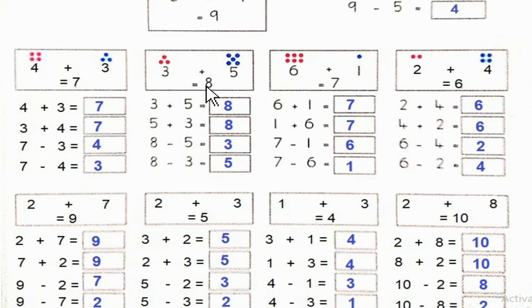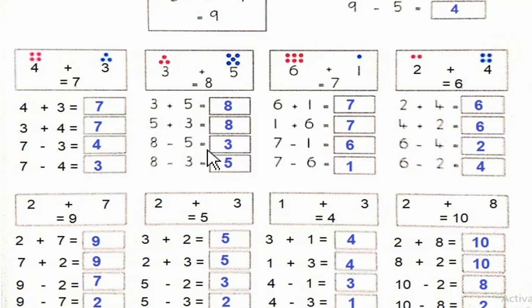3 plus 5 is equal to 8. 5 plus 3 is also equal to 8. 8 minus 5 is equal to 3, and 8 minus 3 is equal to 5.